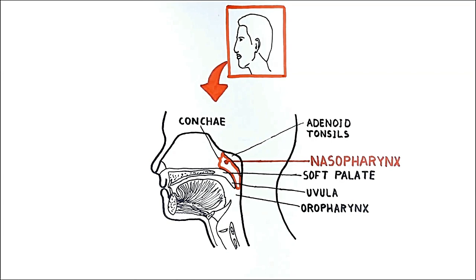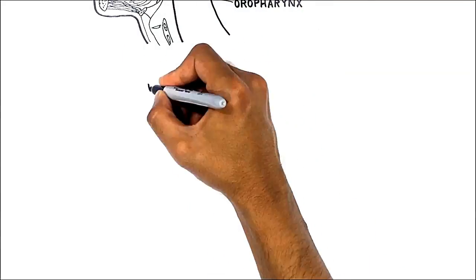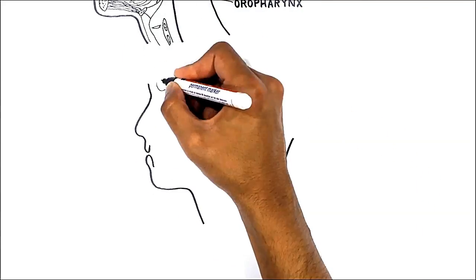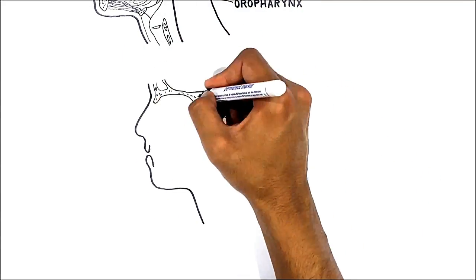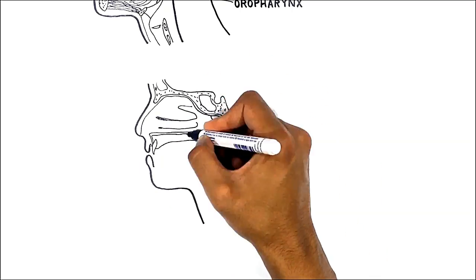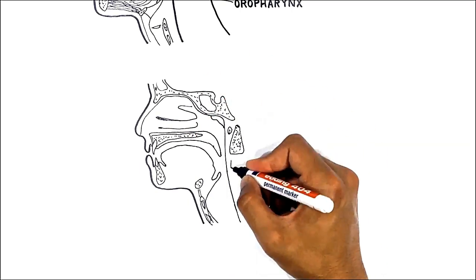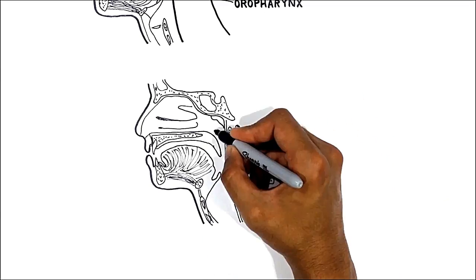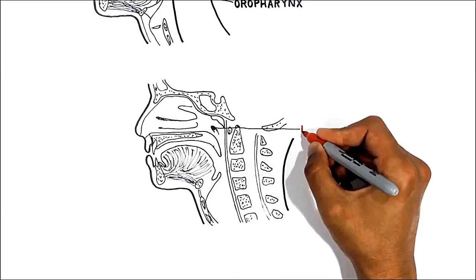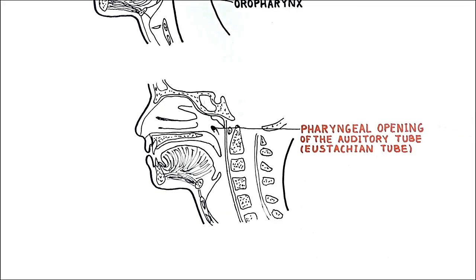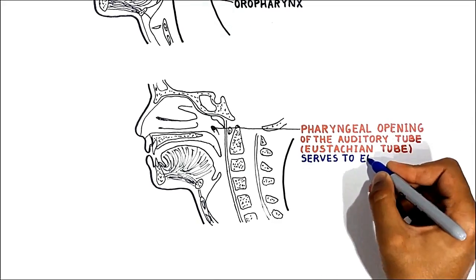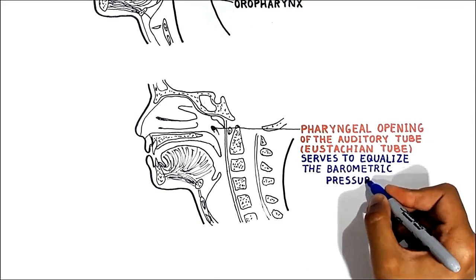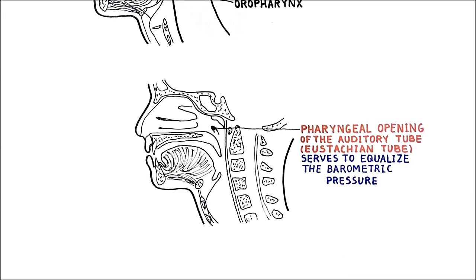Another important structure in the nasopharynx is the pharyngeal opening of the auditory tube, also known as the Eustachian tube. It is located on the lateral walls of the nasopharynx. The auditory tubes connect the middle ear to the pharynx and serve to equalize the barometric pressure in the middle ear with that of the ambient atmosphere.